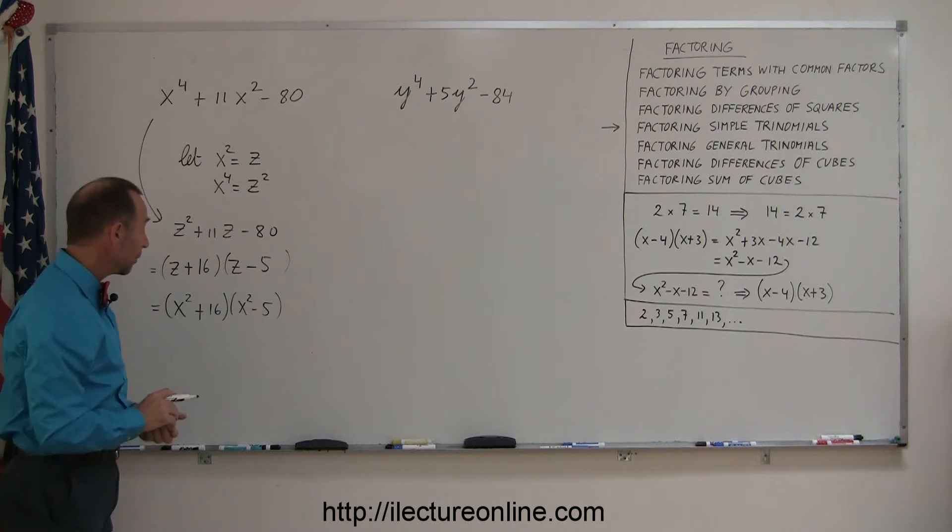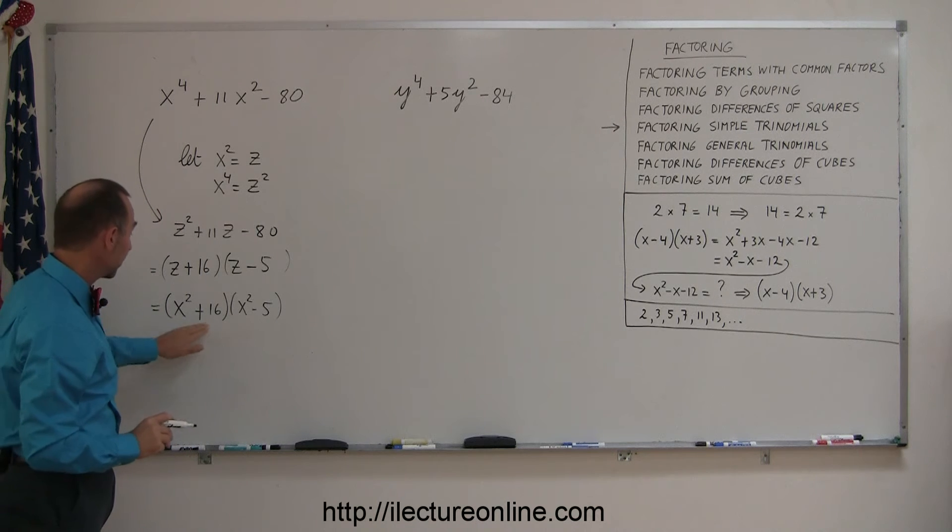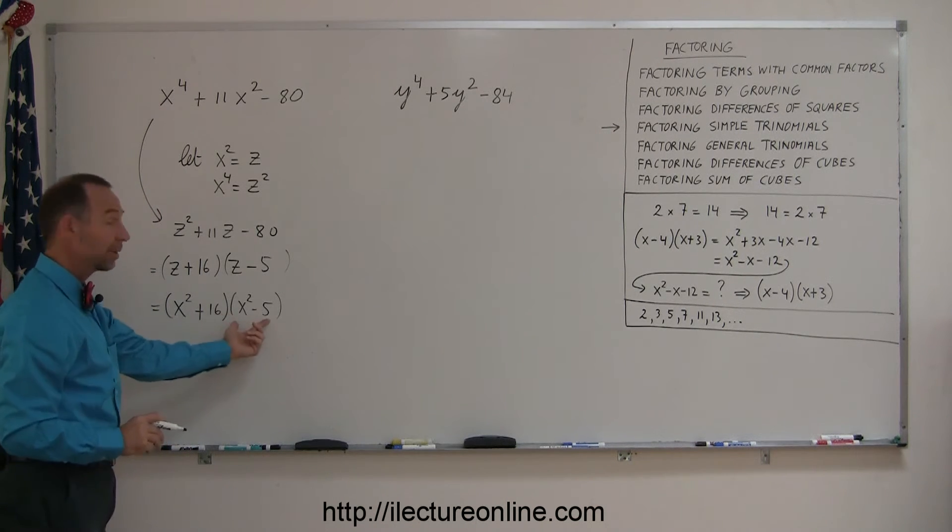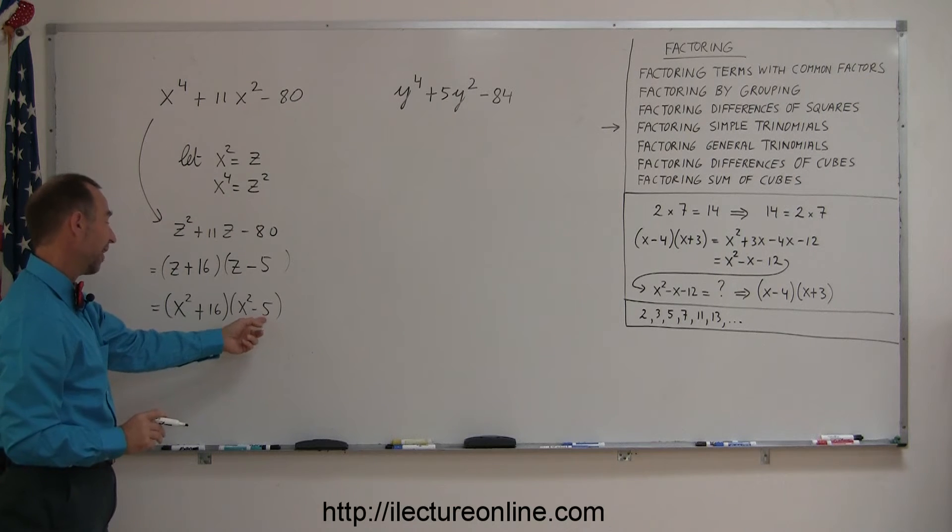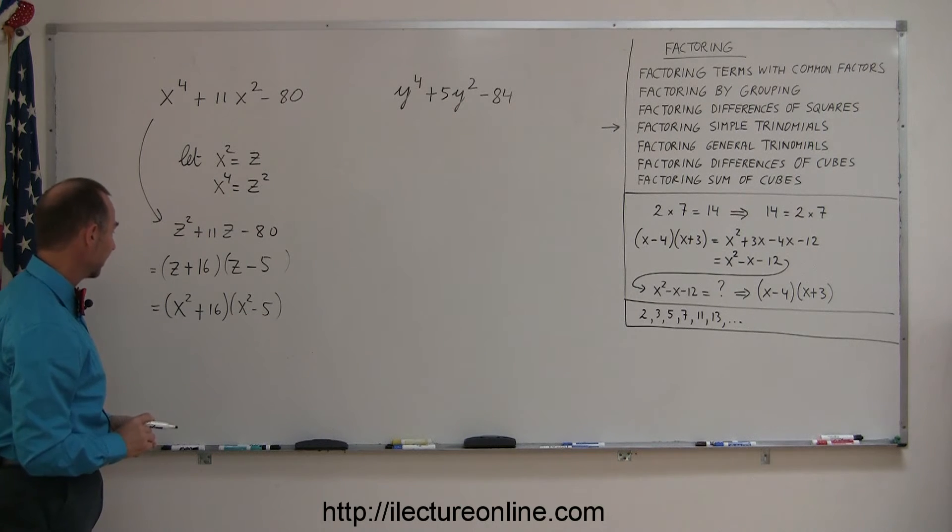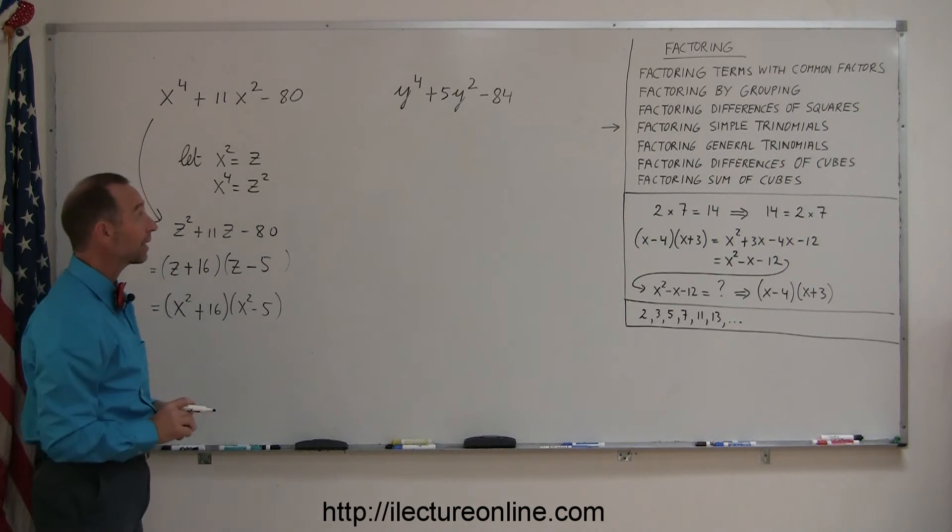Now we look again and make sure that we cannot factor anything further, like maybe the difference of squares. But since 5 is not the square of anything, that's about as far as we can go, and that's the answer for this particular problem. Now that you've seen how we do that, let's apply the very same technique over here.